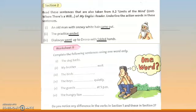Now Worksheet 2: complete the following sentences using one word only — your choice. First is already given: 'The dog barks.' In itself it's a complete sentence — no need to add an object. When we don't add an object, this is an intransitive verb. 'My brother plays well.' You can write 'sings well' or 'writes well' — any word of your choice. 'The birds chirp' — your choice. 'The boys sit quietly.' You can write 'eat quietly' or 'write quietly.' 'The guests came at 5 pm.' 'The hungry lion rose.' There is no object in these — we are not getting the answer of 'what' or 'whom.'